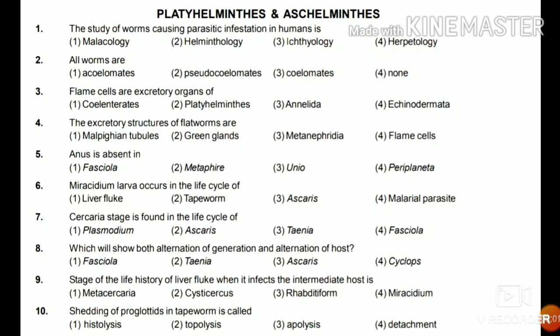In this video we will discuss MCQs about the phylum Platyhelminthes and Aschelminthes. Platyhelminthes includes the flatworms and Aschelminthes includes the roundworms. Fasciola hepatica and tapeworm Taenia solium are present in Platyhelminthes, while Ascaris and lower types of worms are present in Aschelminthes.